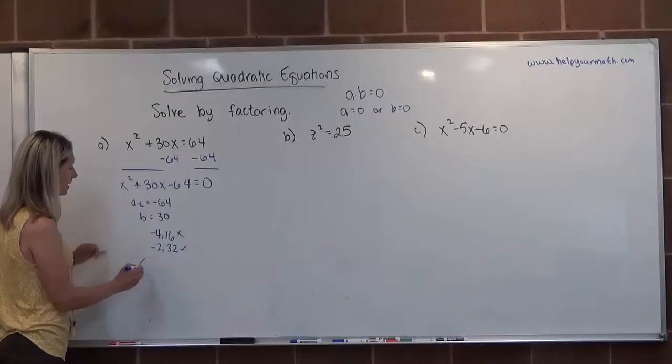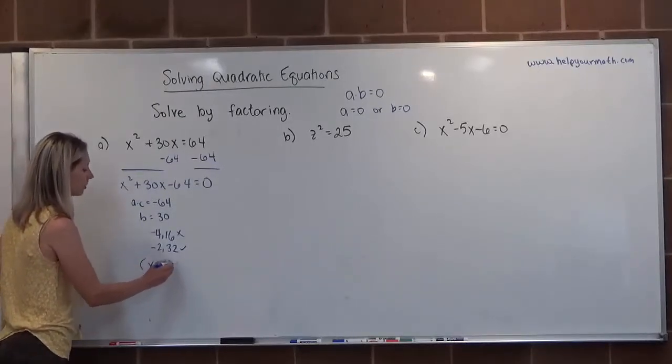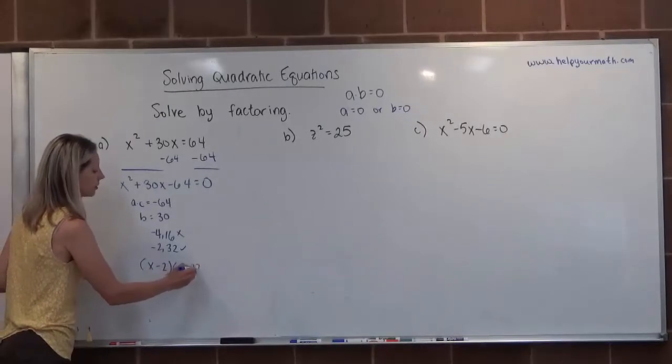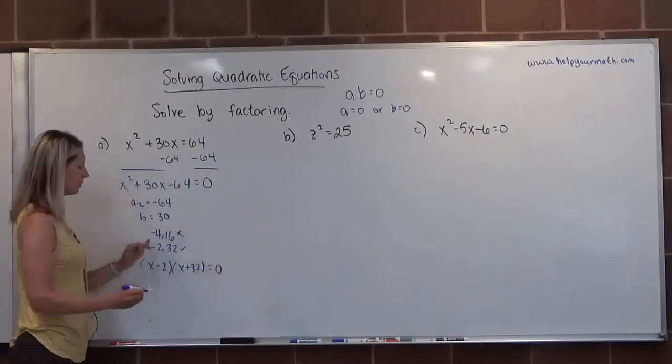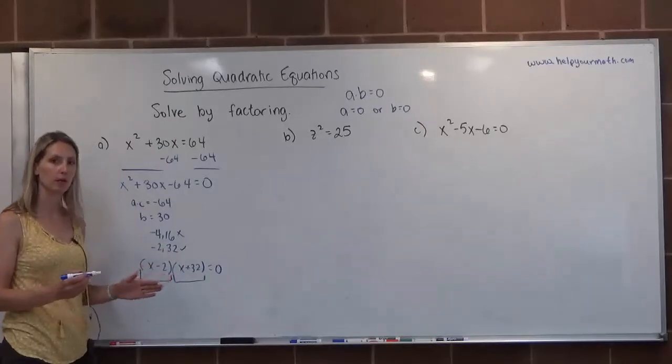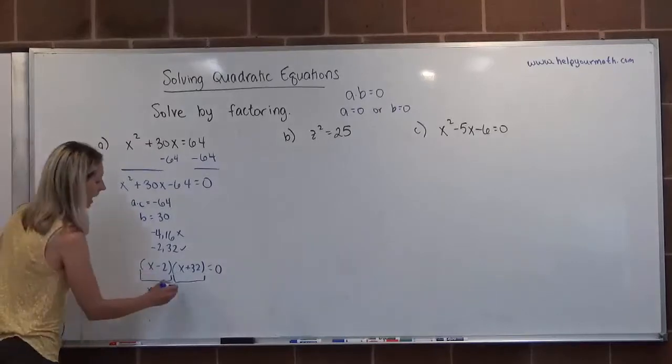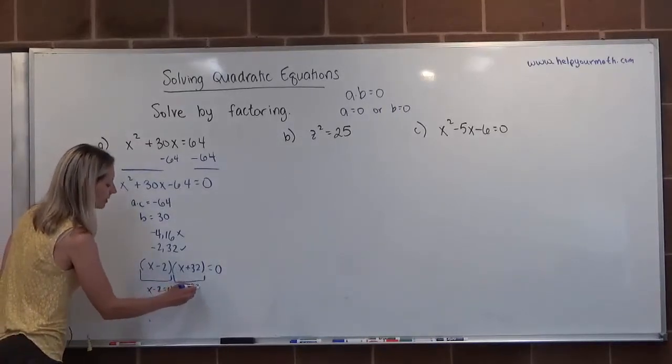So what we do is we're going to replace, we're going to factor the trinomial. It's going to be x minus 2 times x plus 32 is equal to zero. So now we have something times something equals zero.